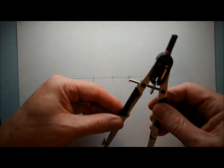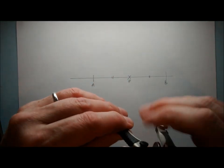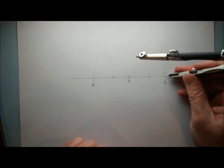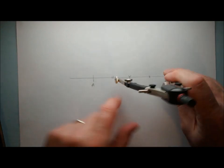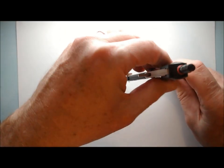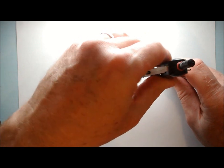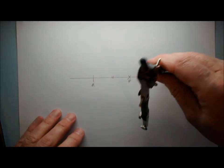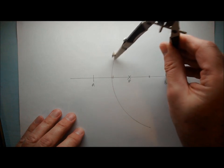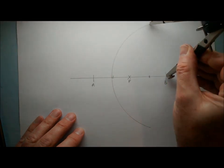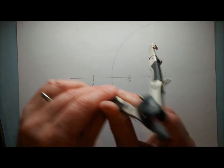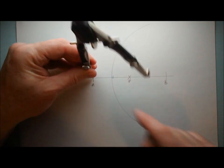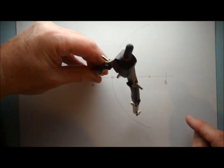I take my compasses and open them up to over halfway along the line — from here, as long as it goes beyond P. I'm going to open up slightly more. Make this nice and big; the bigger it is, the better. Draw an arc going above and below. Keep the compasses the same distance and then draw an arc above and below from the other point.